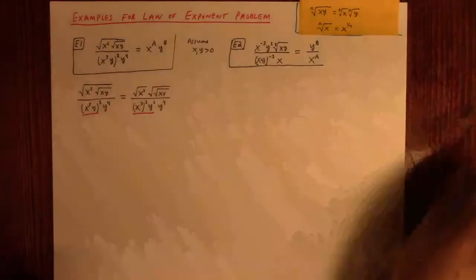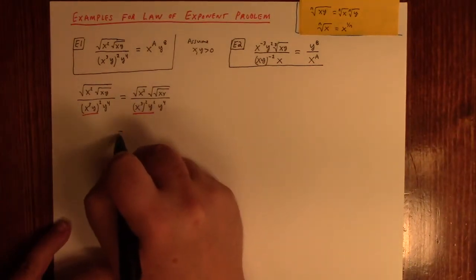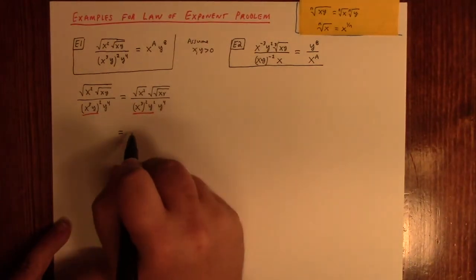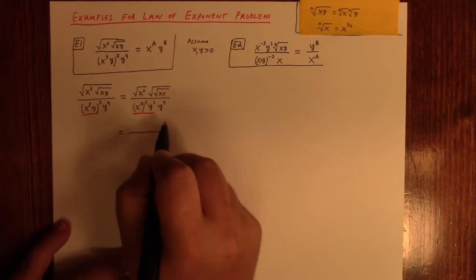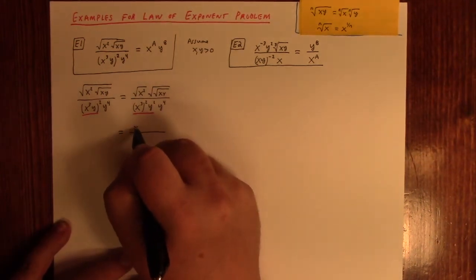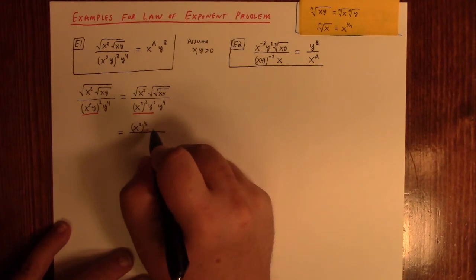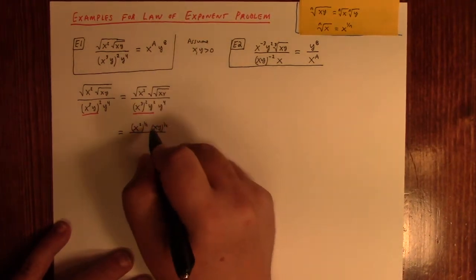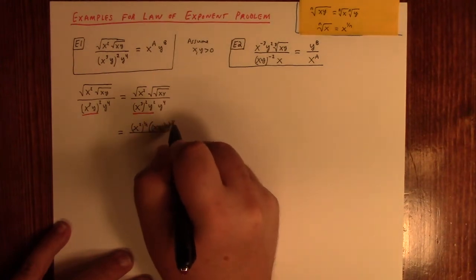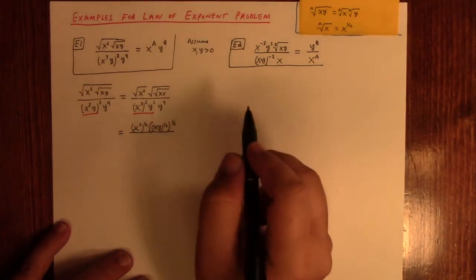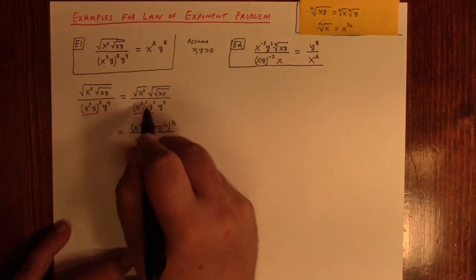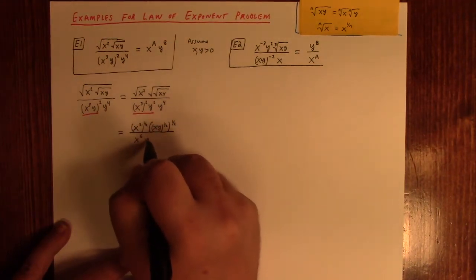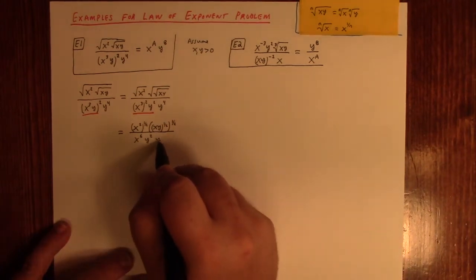Now, at this point, it's going to be convenient for us to sort of, in the numerator, switch over to the fractional notation. So that's really x squared to the 1 half power. And this is x, y to the 1 half power. That's the inside part. And then squared it again to the 1 half power again. Now downstairs, we have x to the 3 times 2, which is 6. y squared. And y to the fourth.